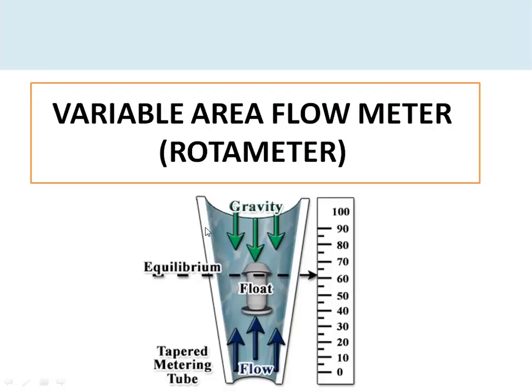In this video I'm going to discuss the variable area flow meter, which is also known as a rotameter. Rotameters are commonly used in applications that require local indication. Most rotameters are made up of a transparent tapered glass tube inside which a float moves, and the position of the float is a direct measure of the flow rate.